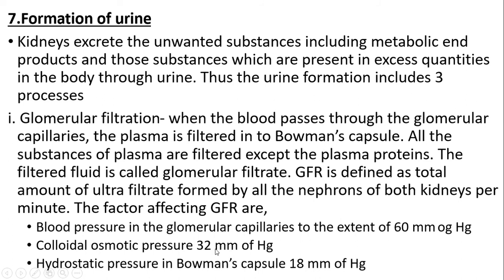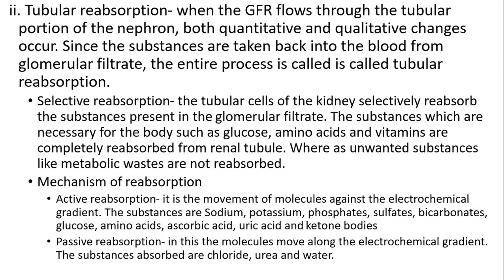The factors which affect GFR are: blood pressure in the glomerular capillaries at about 60 mmHg, colloid osmotic pressure around 32 mmHg, and hydrostatic pressure in Bowman's capsule around 18 mmHg. Second is tubular reabsorption: when the GFR flows through the tubular portion of the nephron, both quantitative and qualitative changes occur, since substances are taken back into the blood from the glomerular filtrate. The tubular cells selectively reabsorb substances present in the glomerular filtrate. Substances necessary for the body — such as glucose, amino acids, and vitamins — are completely reabsorbed, whereas unwanted substances like metabolic waste are not reabsorbed.